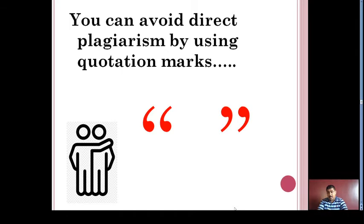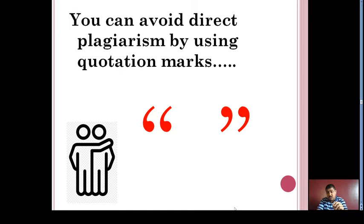Direct plagiarism is the word-for-word transcription of a section of someone else's work without attribution and without quotation marks. Deliberate plagiarism of someone else's work is unethical, academically dishonest, and grounds for disciplinary action. You can avoid direct plagiarism by using quotation marks — quotation marks are your friend. To avoid plagiarism, always use quotation marks when quoting an author, and use words or phrases such as 'stated,' 'mentioned,' or 'in the words of,' indicating you are using the author's exact words.